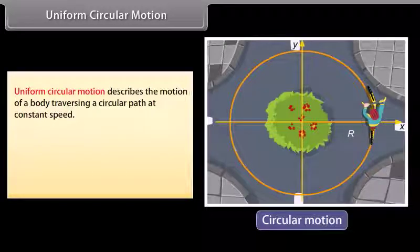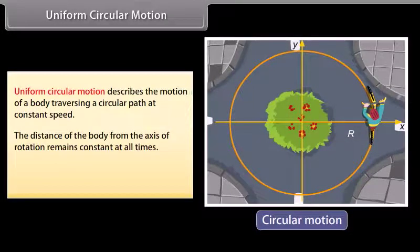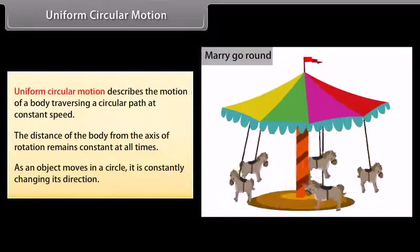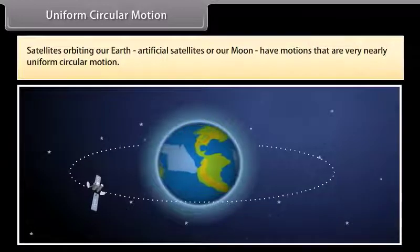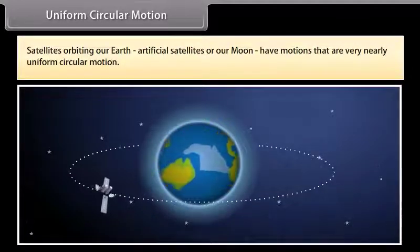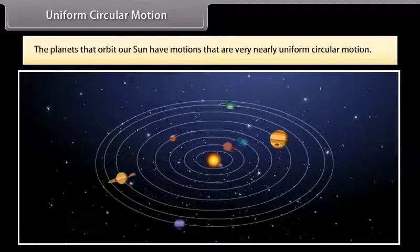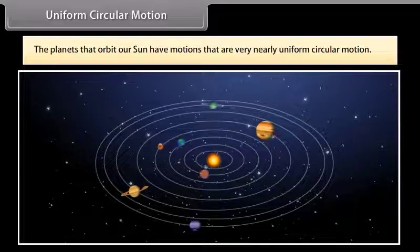Uniform circular motion describes the motion of a body traversing a circular path at a constant speed. The distance of the body from the axis of rotation remains constant at all times. As an object moves in a circle, it is constantly changing its direction. A merry-go-round is an example of uniform circular motion. Satellites orbiting the earth — artificial satellites or our moon — and the planets orbiting the sun all have motions that are very nearly uniform circular motion.